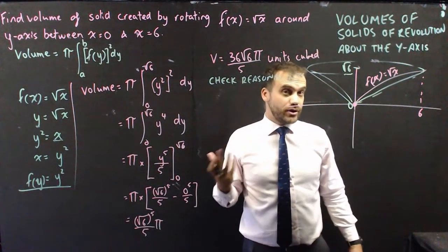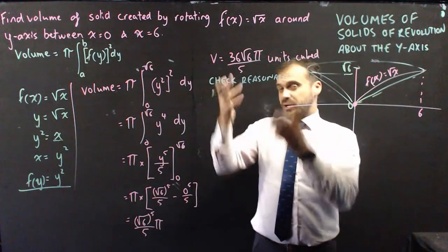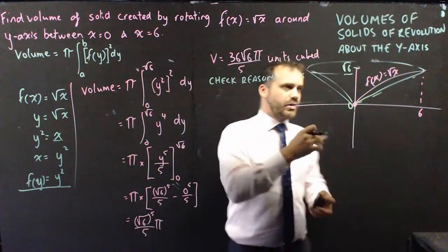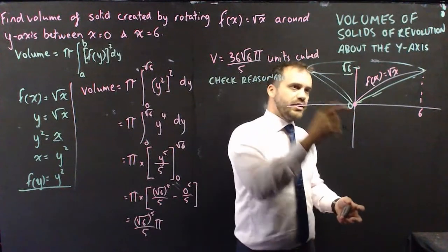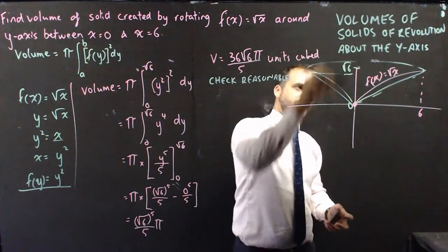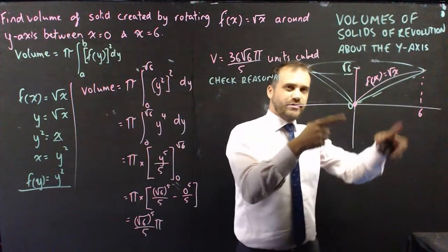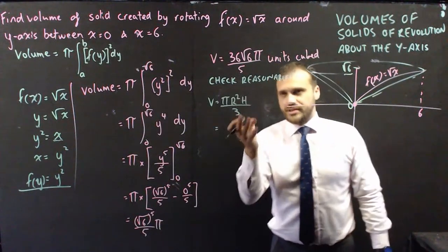So if we find the volume of the cone, we'll know whether our answer is at least close to what it should be. So let's think about this for a second. We have a height of root 6 for our cone, we have a radius of 6, and that's enough information. Look at how interesting this gets.